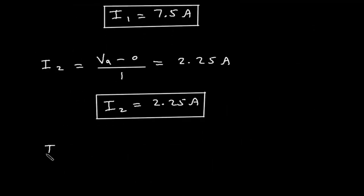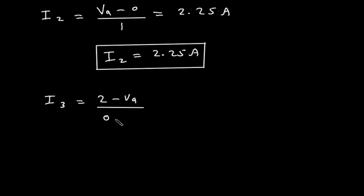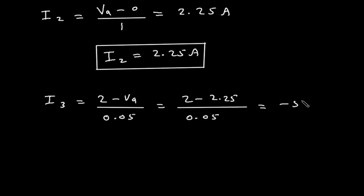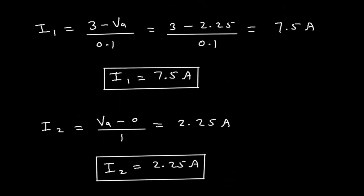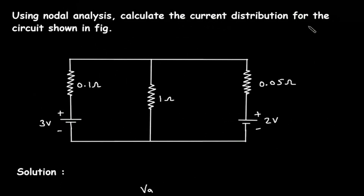Next, I3 equals (2 minus VA) divided by 0.05, so (2 minus 2.25) divided by 0.05, which gives minus 5 amperes. Therefore I3 is equal to minus 5 amperes. So these are the values of I1, I2, and I3 — the current distribution for the circuit.